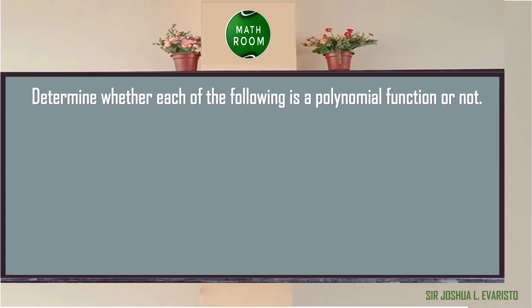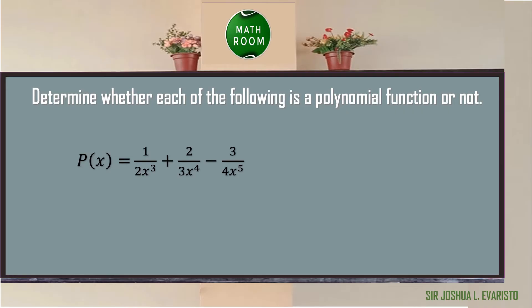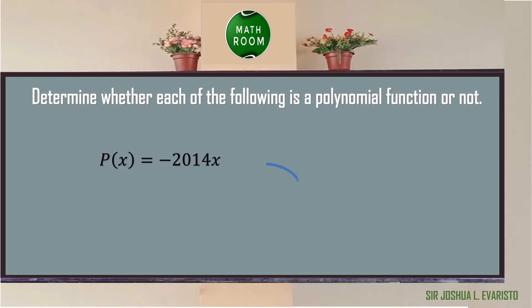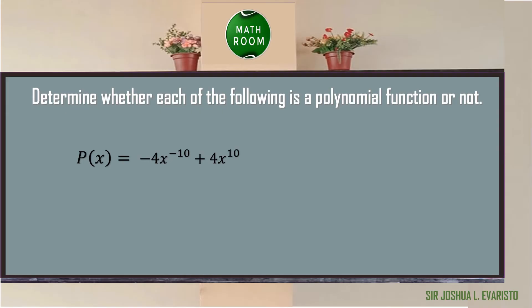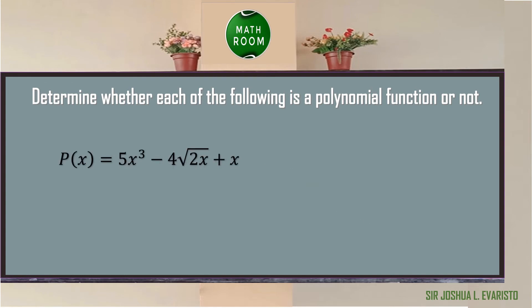Let's have a simple activity: determine whether each of the following is a polynomial function or not. Numbers one, two, and three are polynomial functions. However, the remaining examples are not polynomial functions.